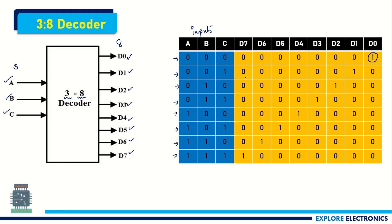Similarly, 001 is decoded as all zeros and D1 is 1. Then 010 will be decoded such that D2 is 1 and all others are 0, and it goes on. For all different possible values of the input, we have taken the corresponding decoding output.